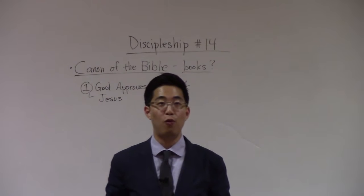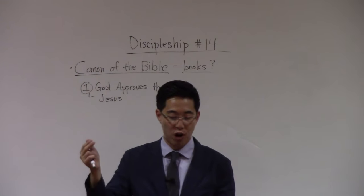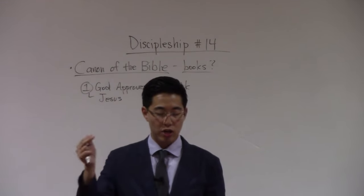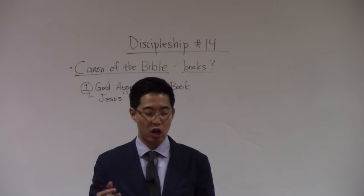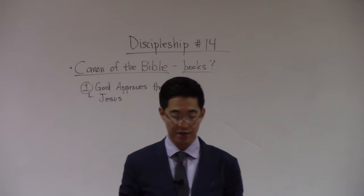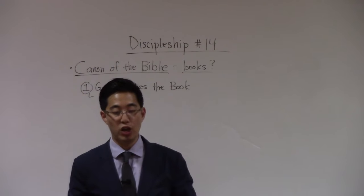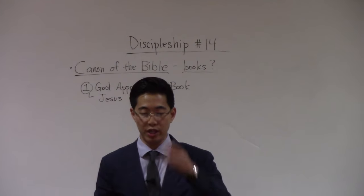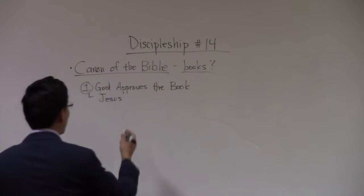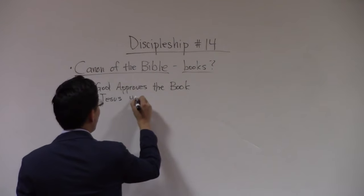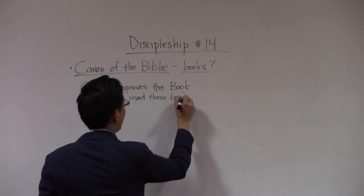That's found in Luke chapter 4, verse 17 through 21. He also called Jonah and Daniel as prophet, at Matthew 12:39 and chapter 24, verse 15. He also quoted Leviticus, Deuteronomy, Psalms, and Zechariah as authoritative sources — found in Matthew 4:1-10, John 8:17, and Mark 14:27. So Jesus Christ used these books. That's why we know which books in the Bible are right.